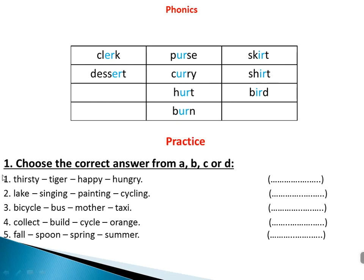Practice: Choose the correct answer from A, B, C, or D. Number one: thirsty, tiger, happy, hungry. All of them are adjectives except 'tiger'. You can replace it with 'hard' or 'easy'.